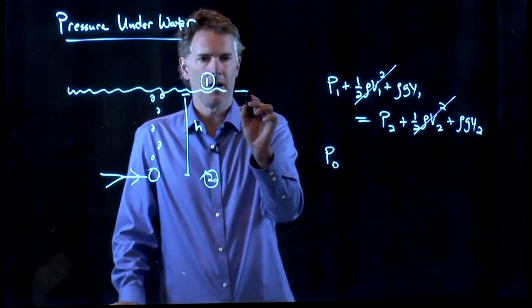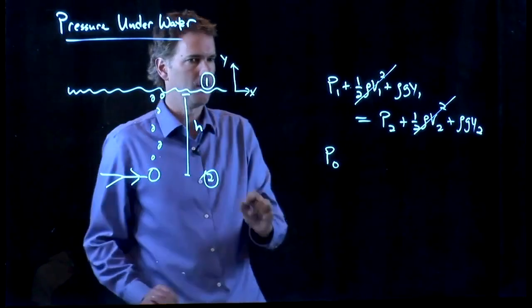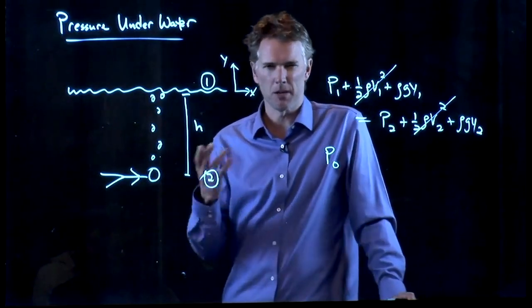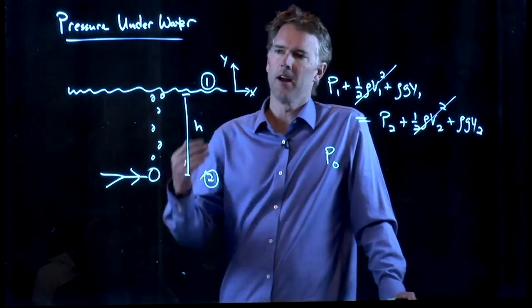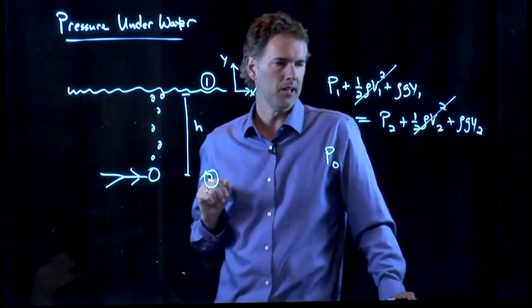We also need to decide on a coordinate system. So people like to make sea level, y equals zero. Whenever you talk about the altitude of a mountain, you always say, how high are you above sea level? So we'll do that. We'll make y equals zero sea level.